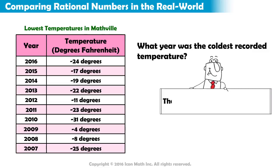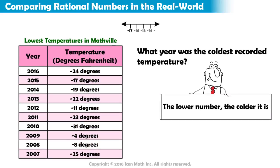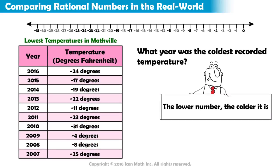Remember, the lower the number, the colder it is. To determine which number is the least, we must consider which number would be the farthest away from 0 on a number line.